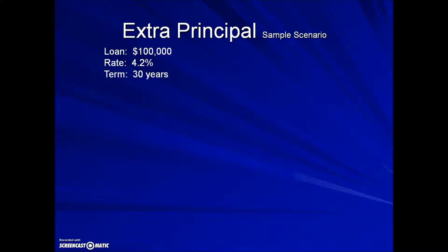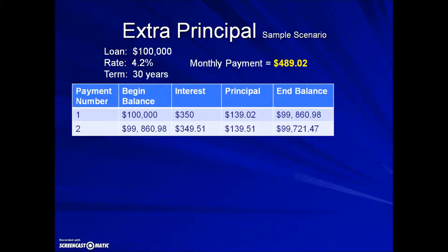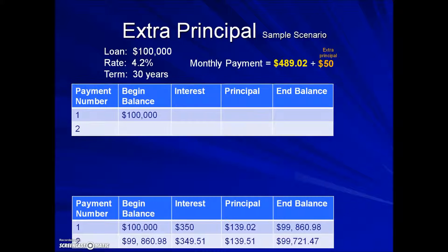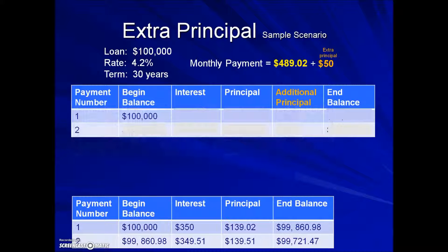Let's see how it works. Here we have a loan of $100,000 with a monthly payment a little under $500. Here's what the original amortization schedule would look like. In this scenario, we're going to add an extra $50 above and beyond the required monthly payment. This $50 will be considered extra principal and reduce the amount owed.